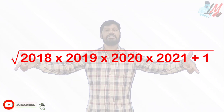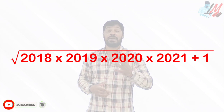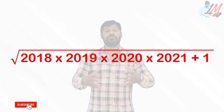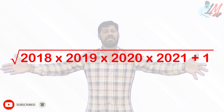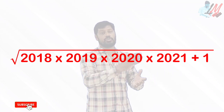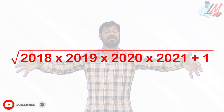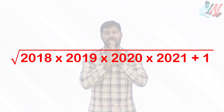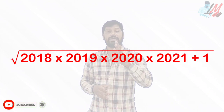As soon as you see this problem, people tend to think that with the help of the factorization method or long division method — what we used to learn for finding the square roots of bigger numbers — we should compute the square root of 2018 × 2019 × 2020 × 2021 plus 1. But definitely, as soon as you see this problem, that is not going to be a good attempt.